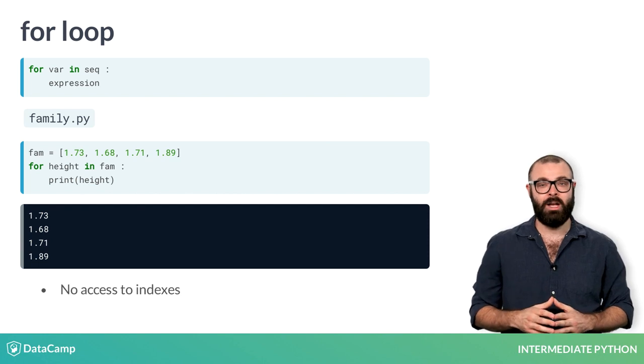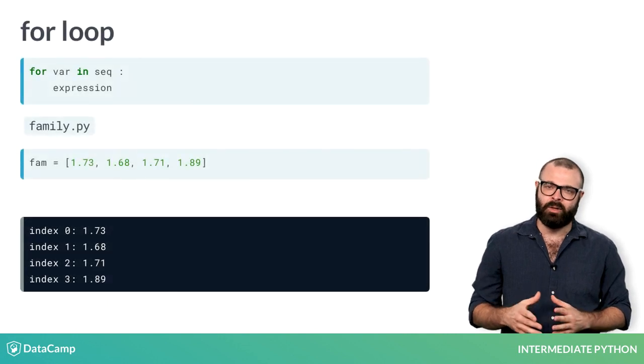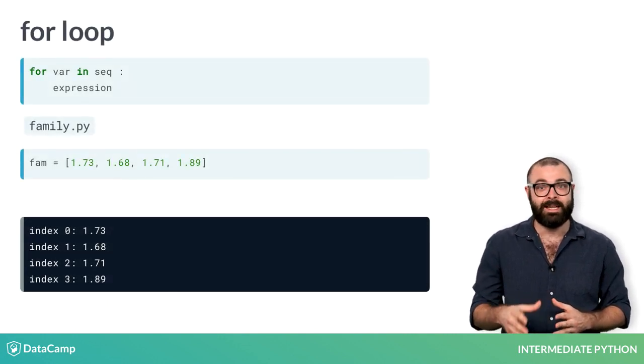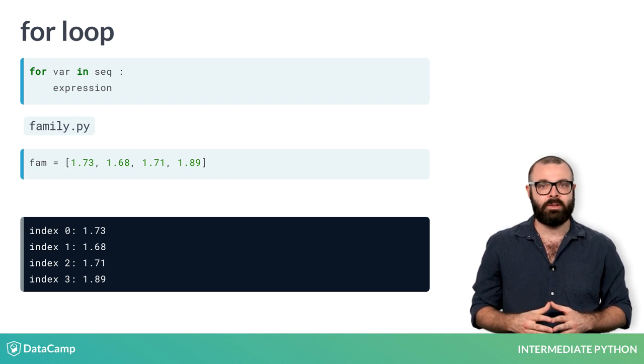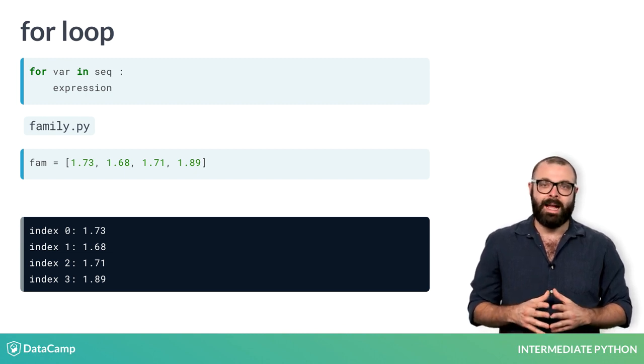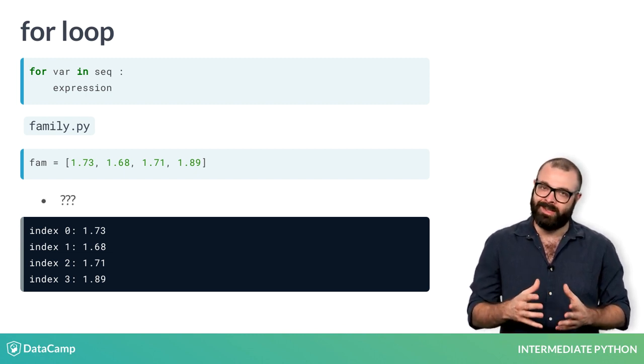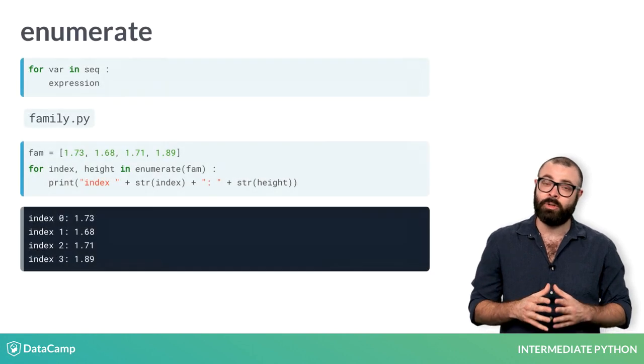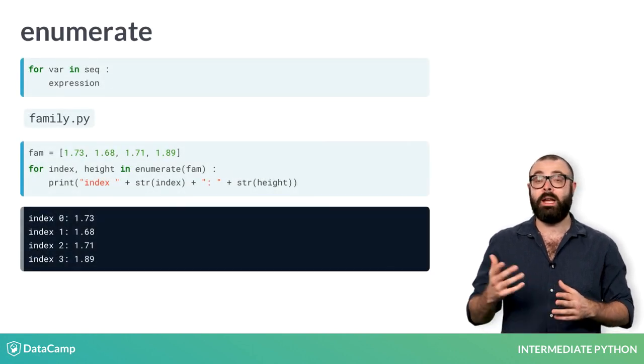In this solution, you don't have access to the index of the elements you're iterating over. Say that together with printing out the height, you also want to display the index in the list, so that the printouts are converted to this. How should the for loop be built in this case? To achieve this, you can use enumerate.